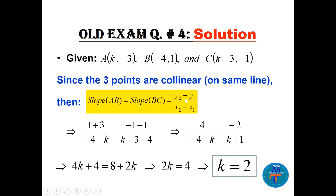Using the slope formula for each pair: slope AB = (1−(−3))/(−4−k) = 4/(−4−k), and slope BC = (−1−1)/(k−3+4) = −2/(k+1). Cross multiply: 4(k+1) = −2(−4−k), giving 4k+4 = 8+2k. Bringing k terms together gives k = 2.